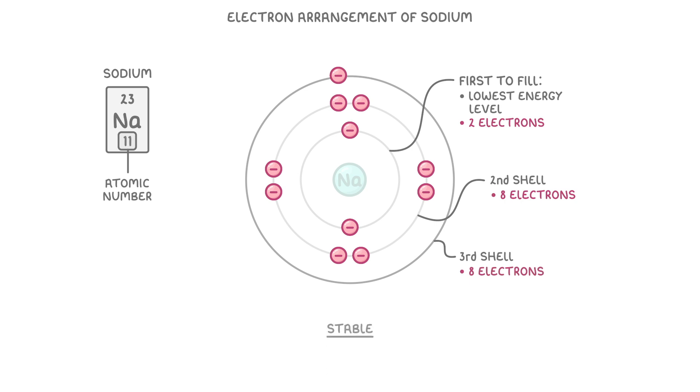In order for atoms to be stable, their ultimate shell, meaning the one furthest from the nucleus, needs to be completely full. You can see here that our sodium atom only has one electron in its outer shell, rather than 8. So we would say that it's unstable. And all we mean by that is that it wants to react with another atom so that it can have a full outer shell.